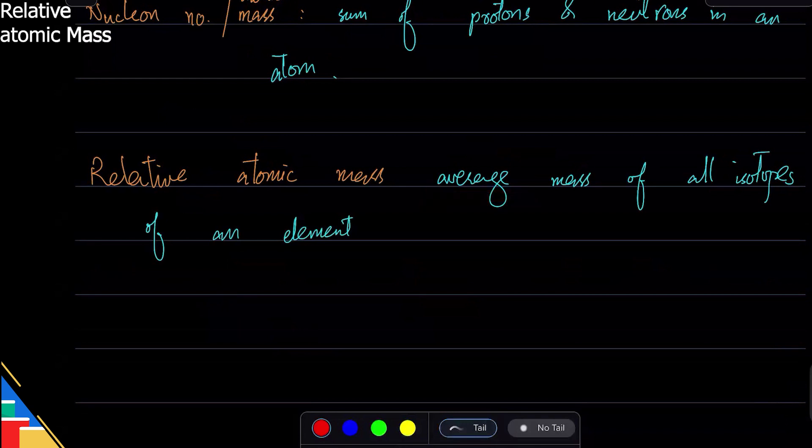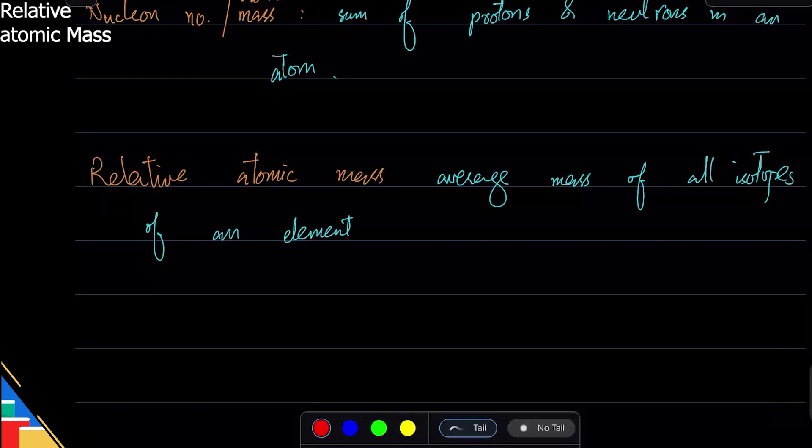So here's a question: can an atom have three and a half neutrons? No, right? But can it have three and a half average neutrons? Yes. Because it can be in average points, but the actual number of neutrons may not be. So relative atomic mass can be in decimal, but actual mass cannot.